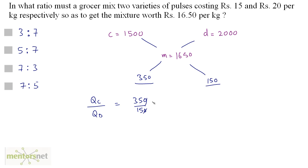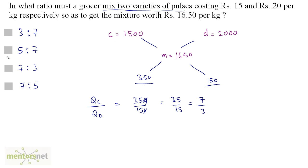The zeros get cancelled out, giving us 35 by 15. Since 5 sevens are 35 and 5 threes are 15, we get 7 is to 3 as the ratio of the varieties of pulses to be mixed.